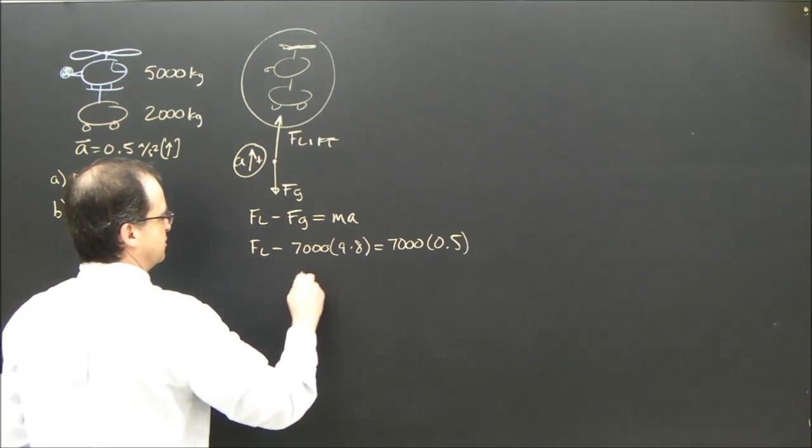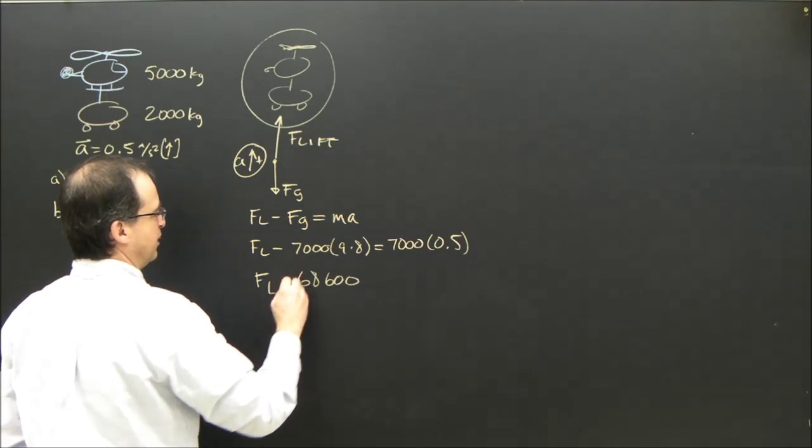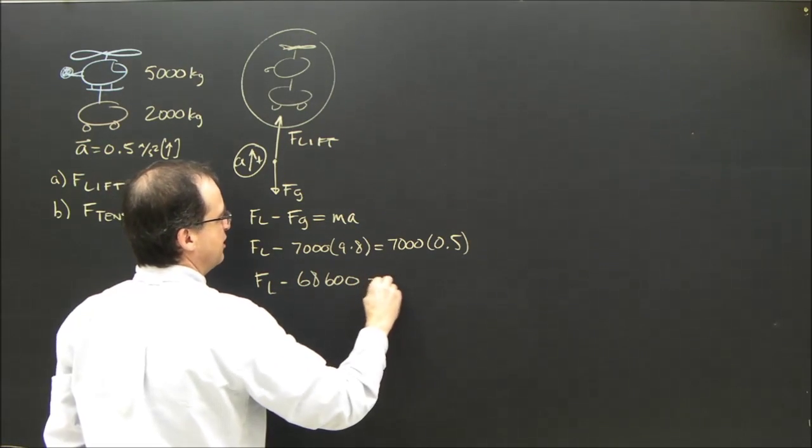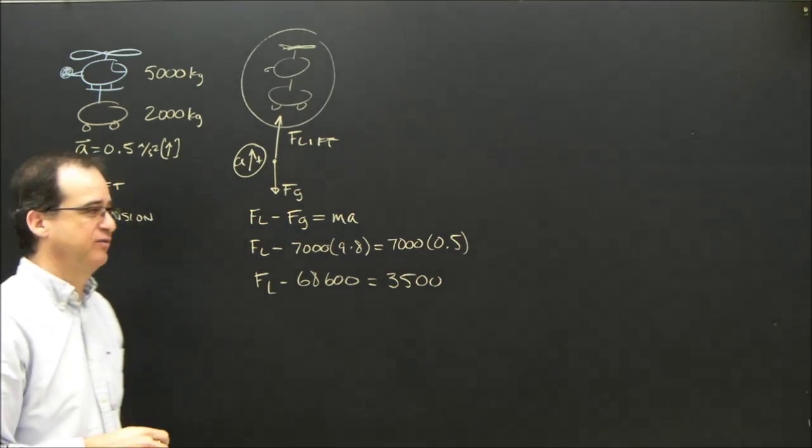68,600. So FL minus 68,600 equals 3,500, because 7,000 times 0.5 is 3,500.